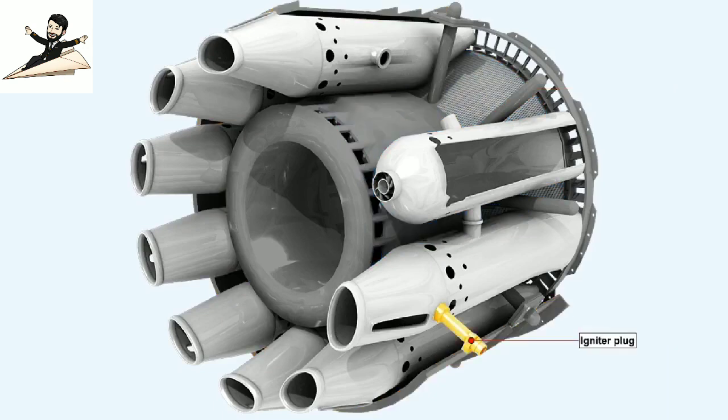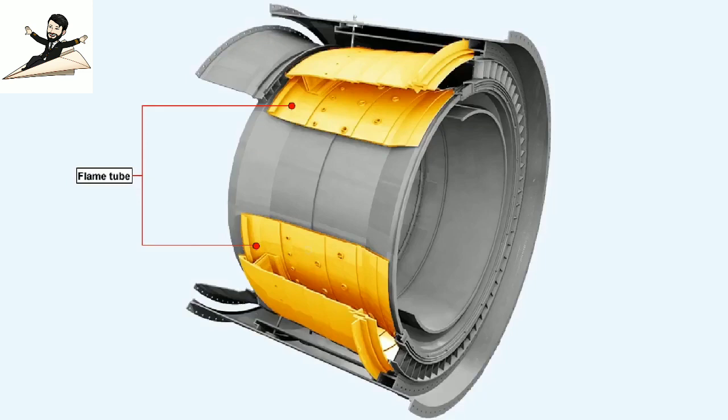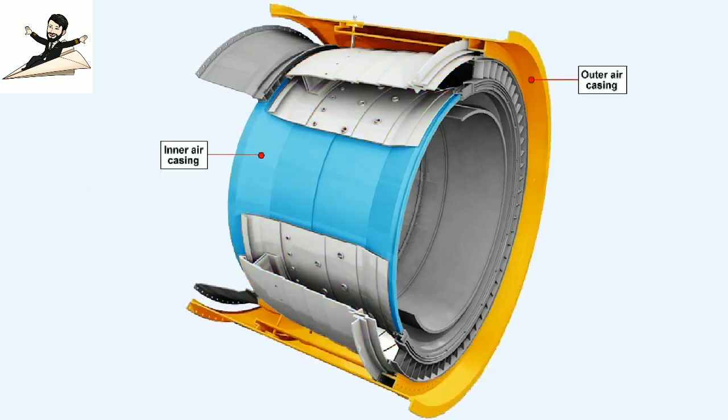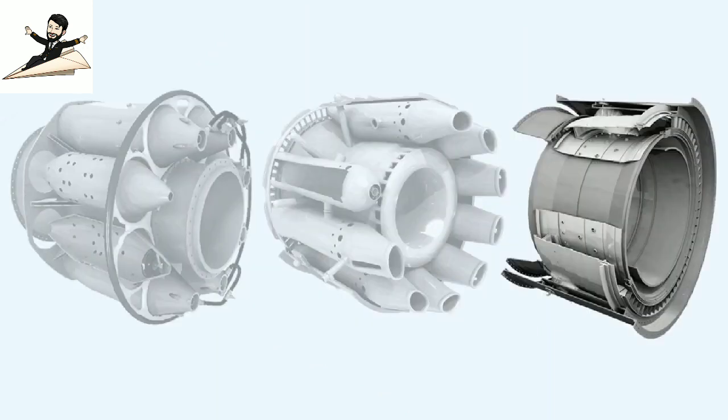Notice the position of the igniter plug. This illustration shows a typical annular combustion chamber system. It has only one flame tube contained by an inner and outer air casing. The annular system has several advantages over the multiple combustion chamber system and the tubo-annular system from which it was developed.